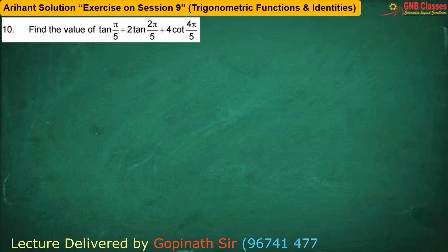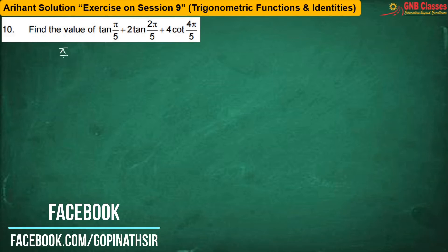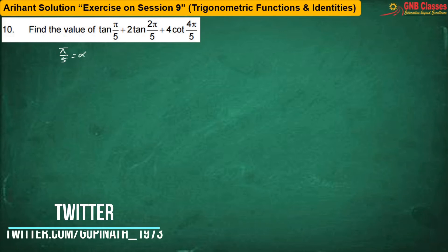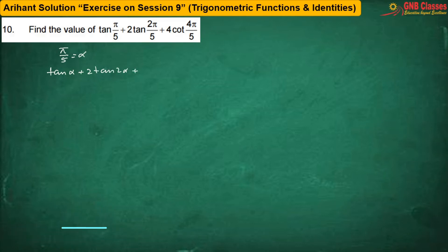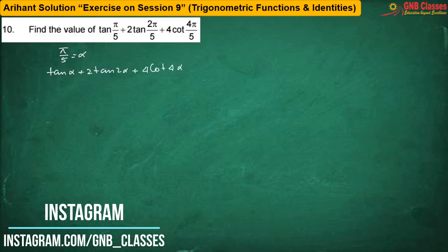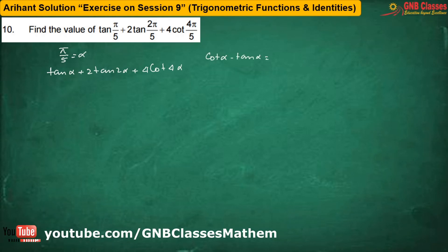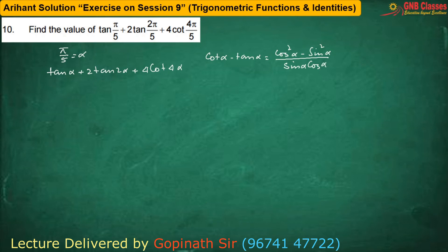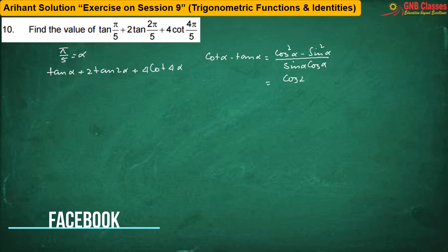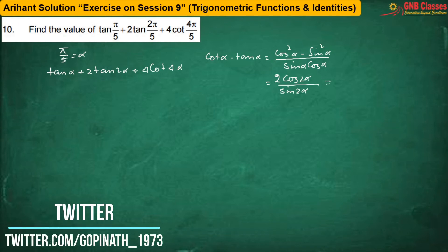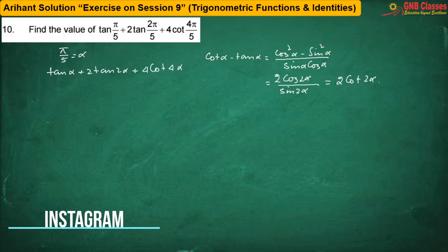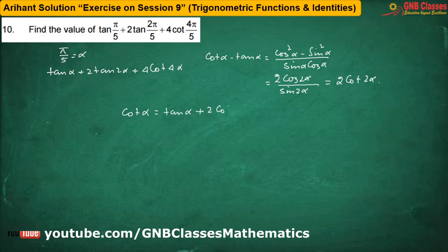To find out the value of tan(π/5) + 2tan(2π/5) + 4cot(4π/5). For convenience, let α = π/5, so we have to find tan α + 2tan 2α + 4cot 4α. Starting from cot α − tan α, after taking LCM, we get 2cot 2α. So cot α = tan α + 2cot 2α.